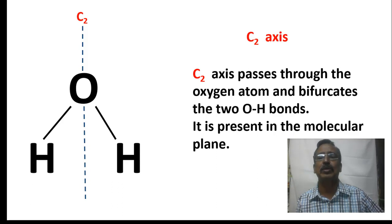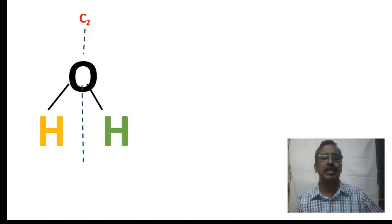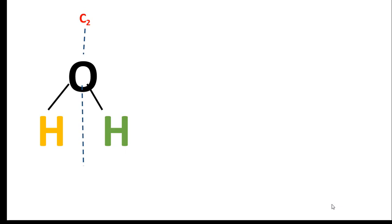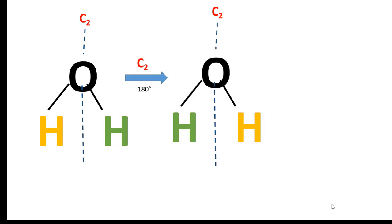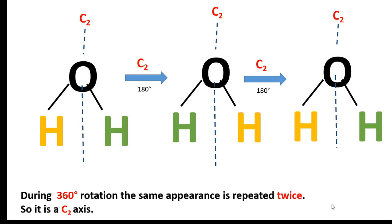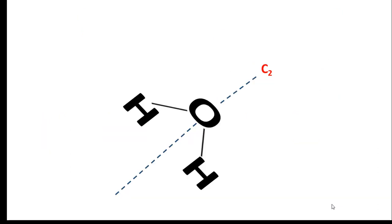The C2 axis passes through the oxygen atom and bifurcates the two O-H bonds; it is present in the molecular plane. It can be visualized like this. Though I have colored the two hydrogen atoms differently — one as yellow and another as green — both of them are identical; we use two different colors just to distinguish between them. When the molecule is rotated through 180 degrees, the positions of the two hydrogen atoms interchange, yet it is an equivalent appearance. Rotating through another 180 degrees interchanges them again and we get the original molecule back. During a complete rotation of 360 degrees, the equivalent appearance is repeated two times, confirming this as the C2 axis.